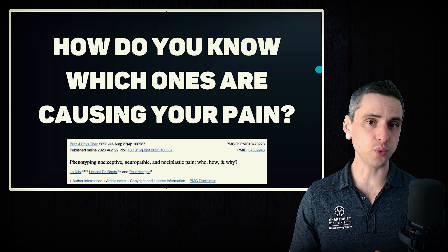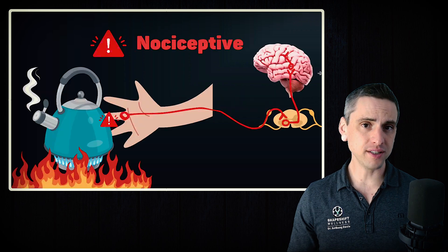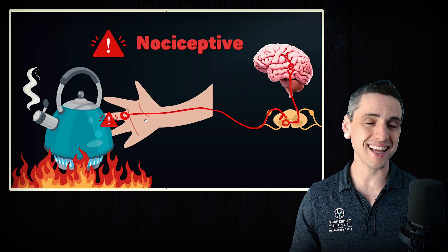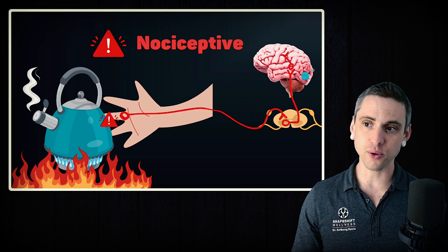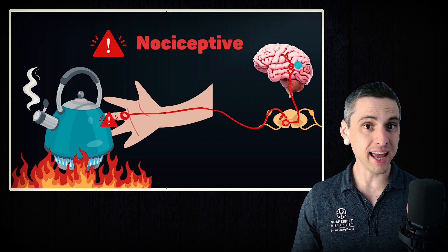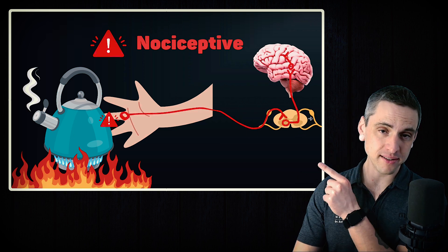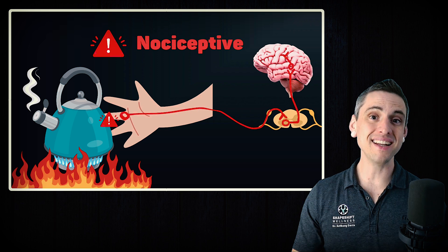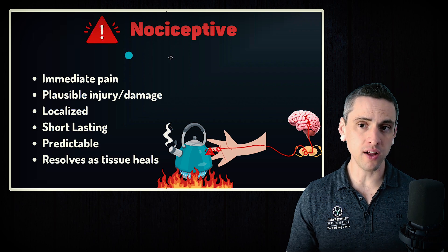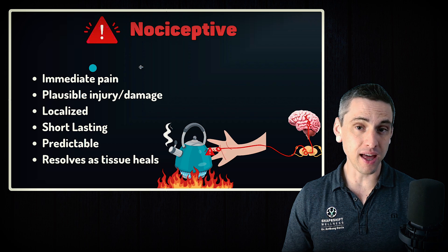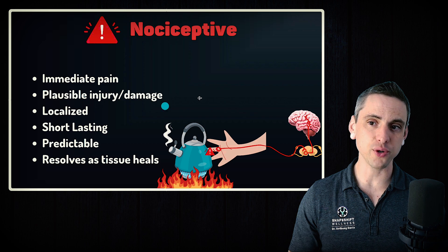So we've got three types of pain — how do you know which one or ones are causing your pain? Let's start with nociceptive. Nociceptive is damage in the body. For example, you touch a hot kettle or hot stove. Receptors in your hand sense the damage and send a message through the spinal cord to the brain, and that damage turns into pain. This is the least common type of pain in chronic pain, but it is the most common type of pain if you just recently injured yourself. Your pain will have started immediately after doing something that clearly caused an injury, so we have a plausible mechanism for an injury or actual tissue damage.